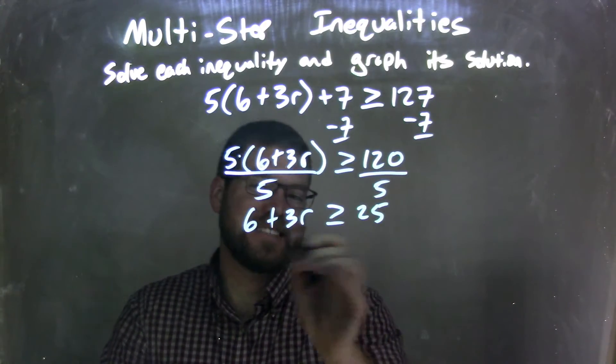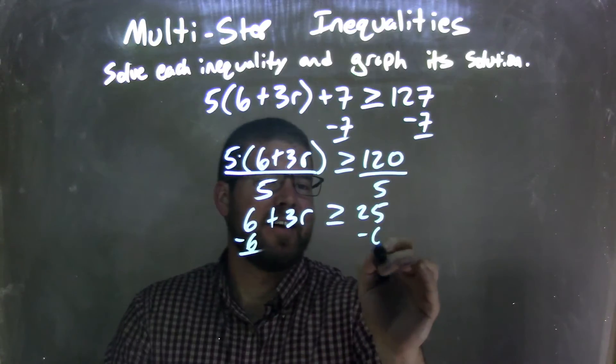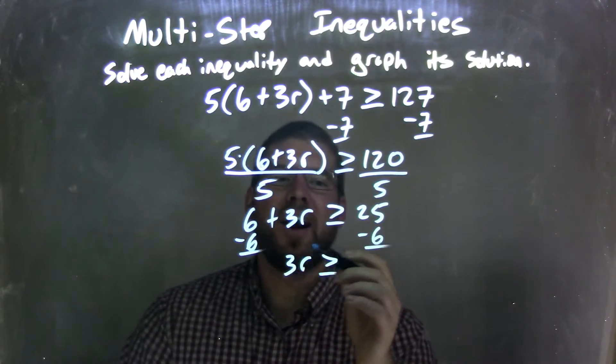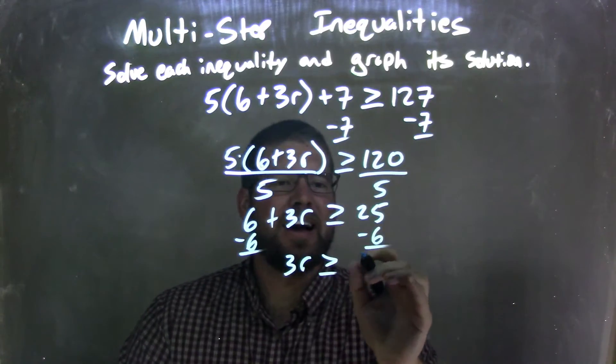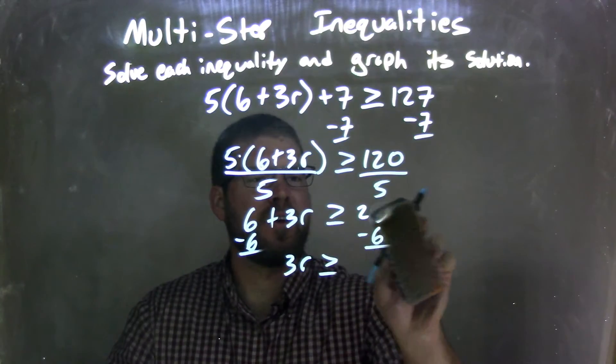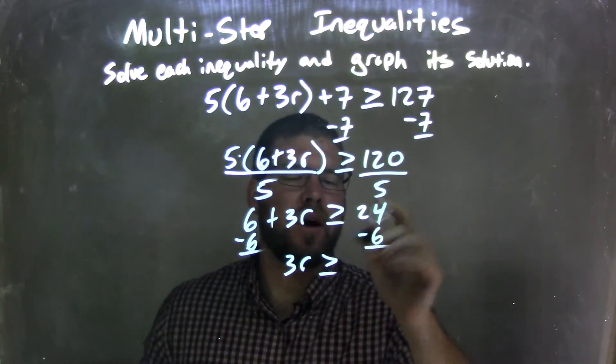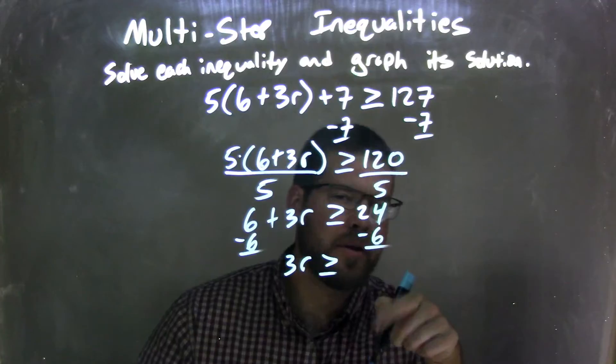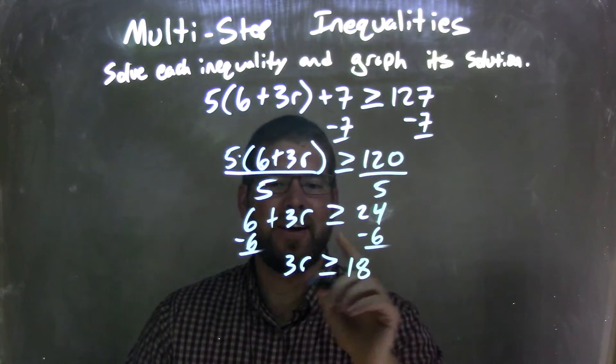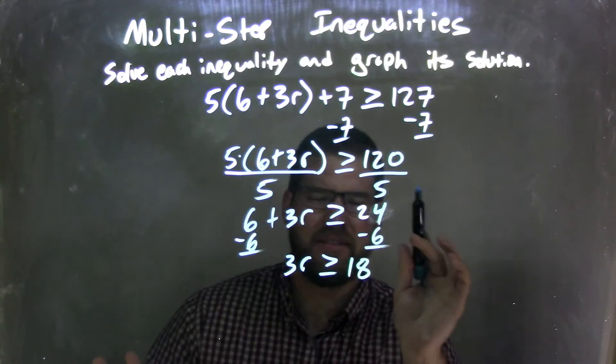So I need to subtract 6 now on both sides to get 3R by itself. So 3R is greater than or equal to 25 minus 6 being 19... 25 is 24. And I wrote 25, sorry about that. I wonder who caught it. If you caught it before I did, put it in the comment section. So we have 24 minus 6 is 18, right? I don't know how I put 25, I wasn't thinking. 24.